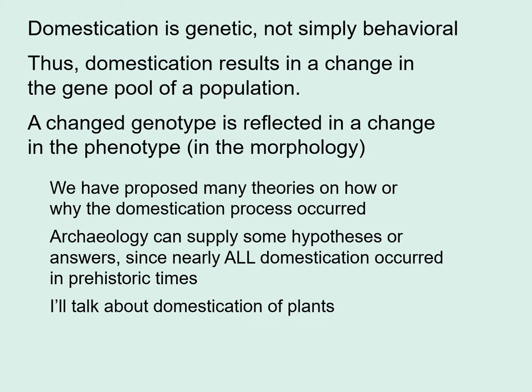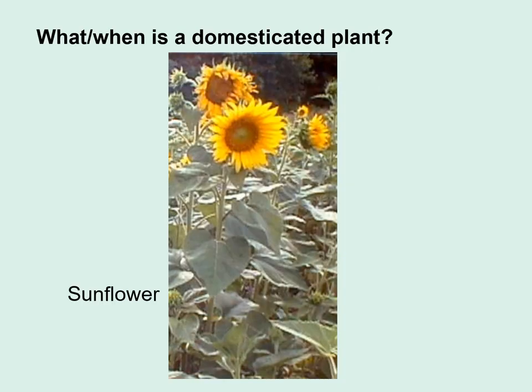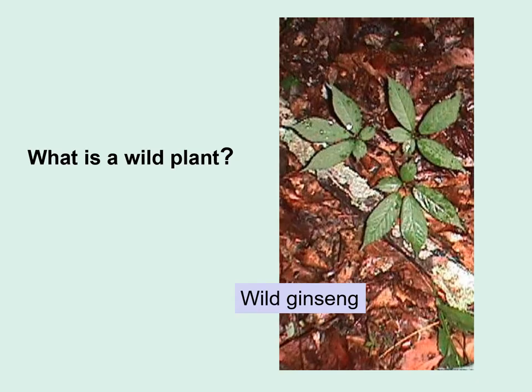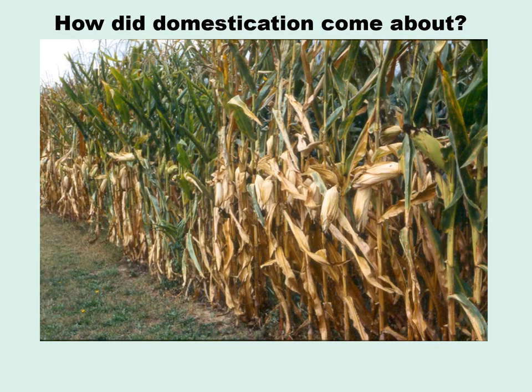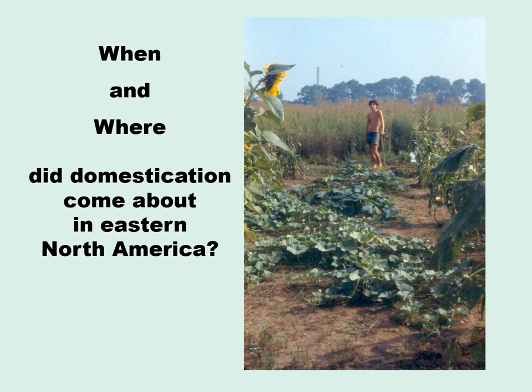We've proposed many theories on how or why the domestication process occurred, but we have to turn to archaeology for all of our answers or hypotheses, since nearly all domestication occurred in prehistoric times before written records. Today I'll talk about the domestication of small seeded plants. I'll start by talking about what and when is a domesticated plant versus what is a wild plant versus what is a weed. I'd also like to talk about how domestication came about, and especially when and where it came about in eastern North America.